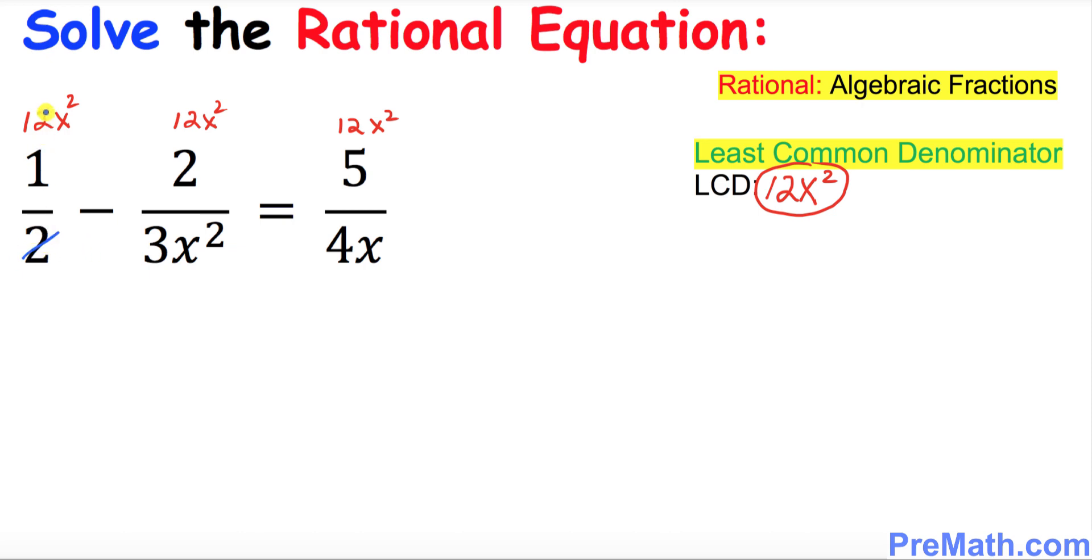So this 2 goes into 12 six times, so this simply becomes I want you to just put down 1. This one just, whatever, 1 times 6x square minus. And then over here you can look at this thing, 3 goes into 12 four times and this x square and this x square, they cancel each other out. So we got negative 2 times this 4, you just put it down.